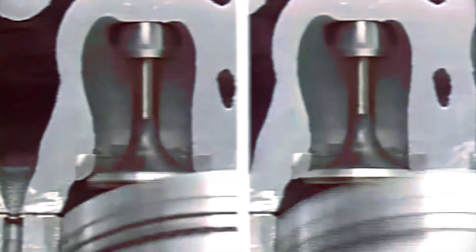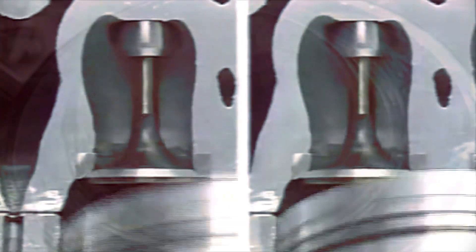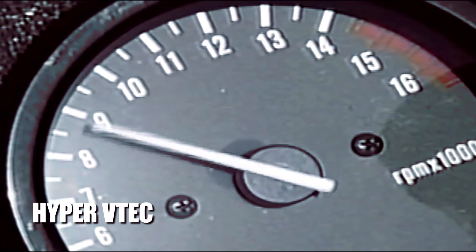But it could also hold a smooth idle at 1,000 RPM. The result was what Honda internally labeled Hyper VTEC, which was introduced in the CBR 400 in 1983.